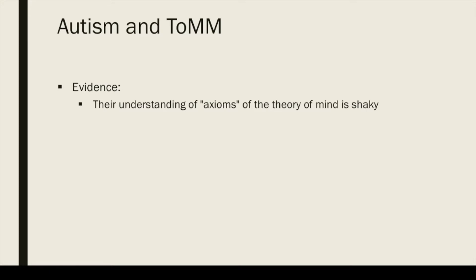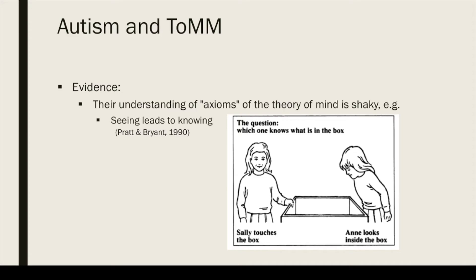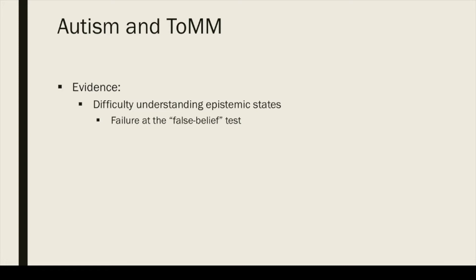Moreover, there is evidence that their understanding of the axioms of the theory of mind is rather shaky. For instance, the typical three-year-old child can pass the seeing-leads-to-knowing test, which requires understanding that merely touching a box is not enough to know what's inside. Children with autism and Asperger's syndrome are delayed in this. Children in the autistic spectrum also have difficulty understanding epistemic states. We know that the typical four-year-old child passes the false belief test, recognizing when someone else has a mistaken belief about the world. However, most children with autism spectrum are delayed in passing this test.